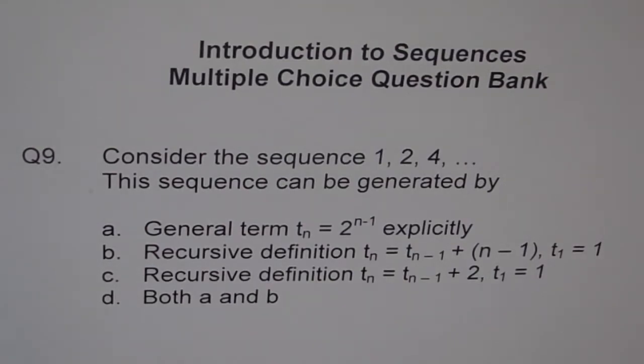Question 9. Consider the sequence 1, 2, 4 and so on. This sequence can be generated by, then we have 4 options here.